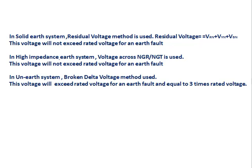In summary: in a solid earth system, the residual voltage method is used (Vrn + Vyn + Vbn), which will not exceed rated voltage for an earth fault. In a high impedance earth system, the voltage across the NGR or NGT is used, also not exceeding rated voltage. In an unearthed system, the broken delta voltage method is used, which exceeds rated voltage and equals three times the rated voltage for an earth fault.